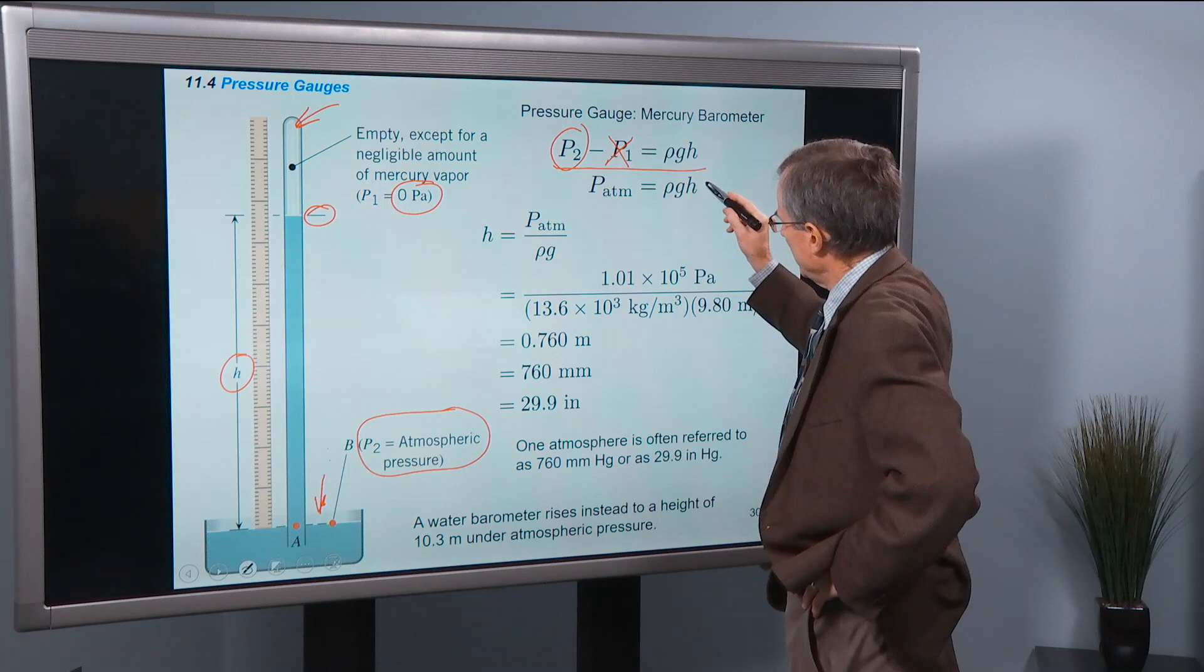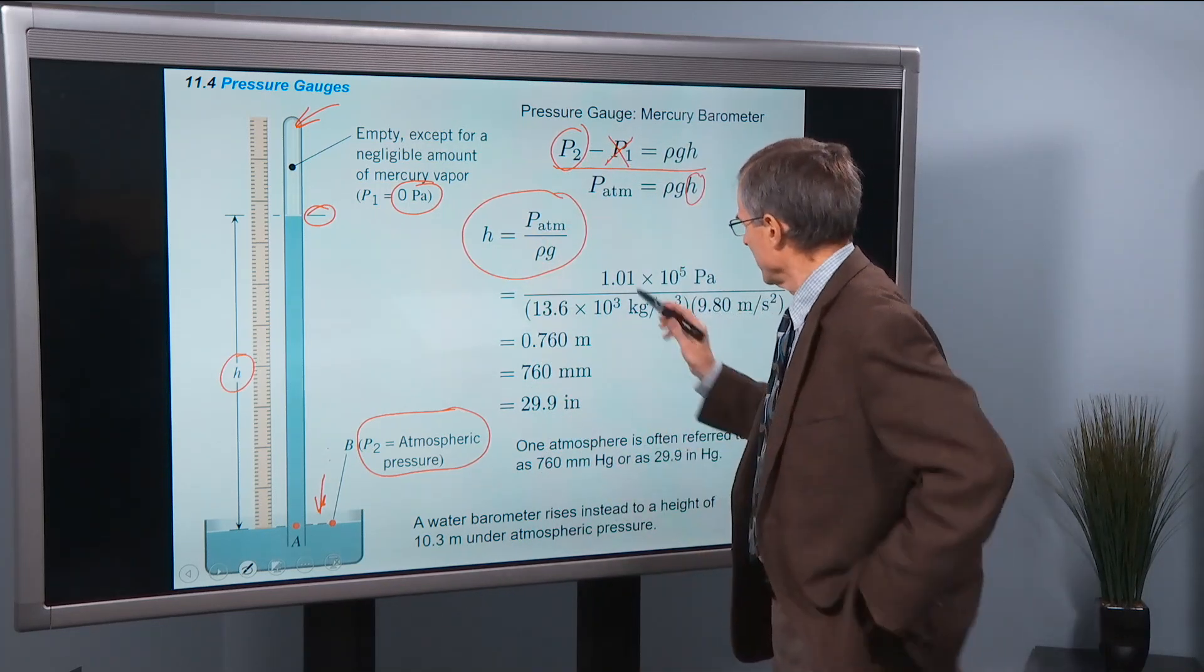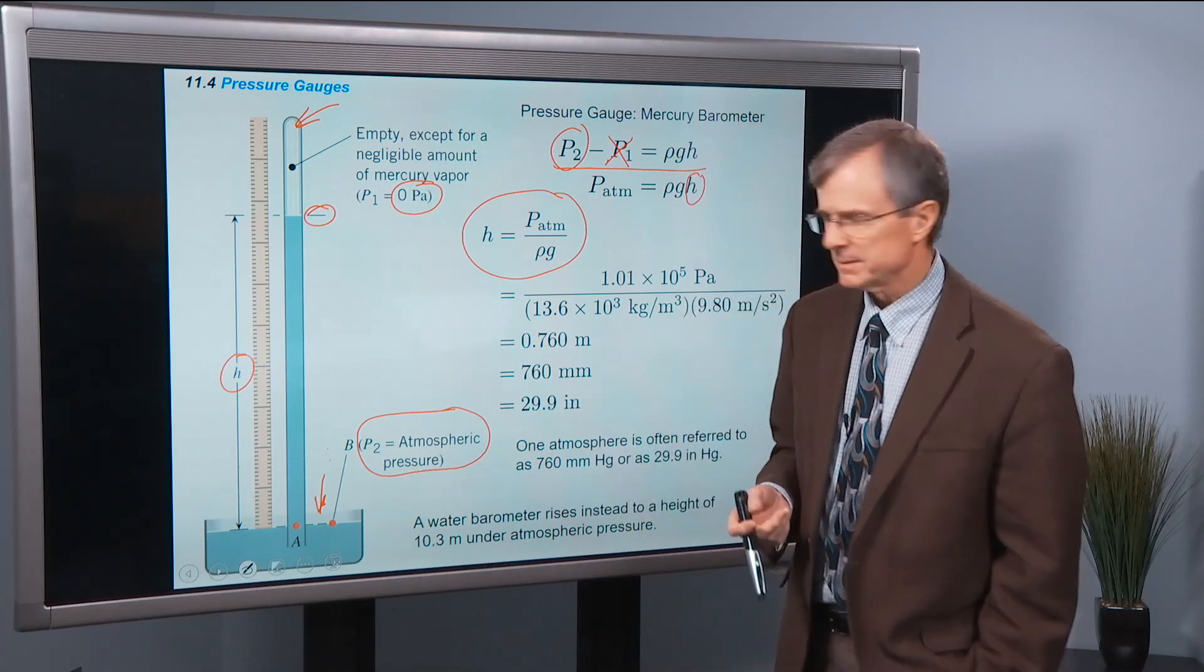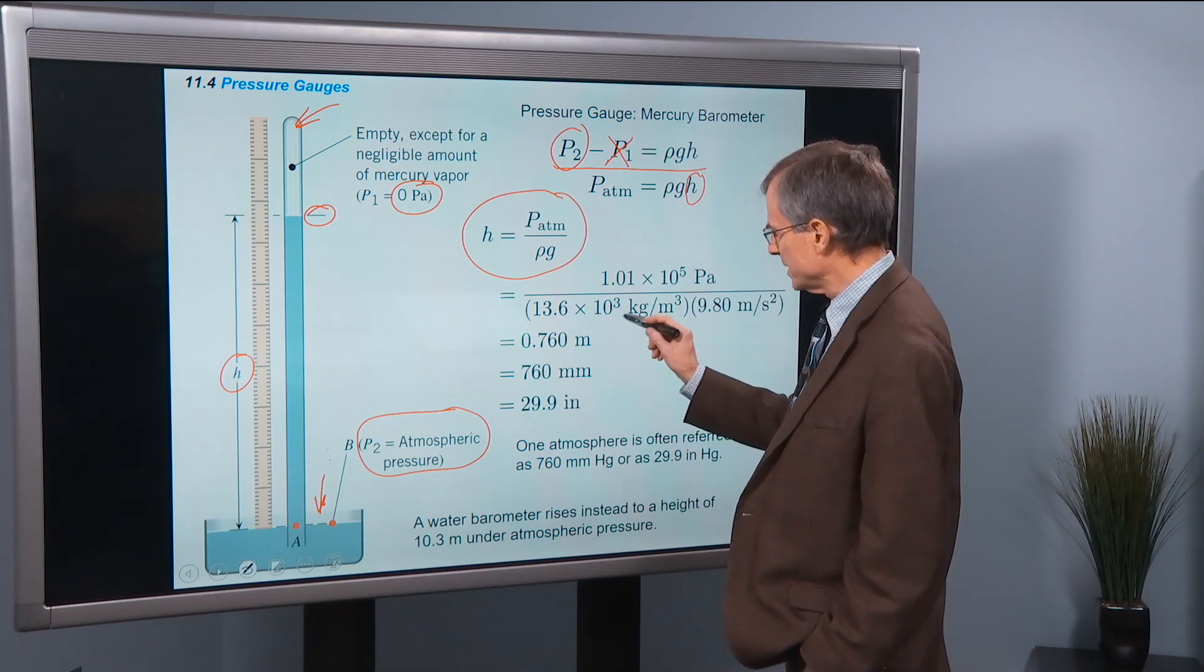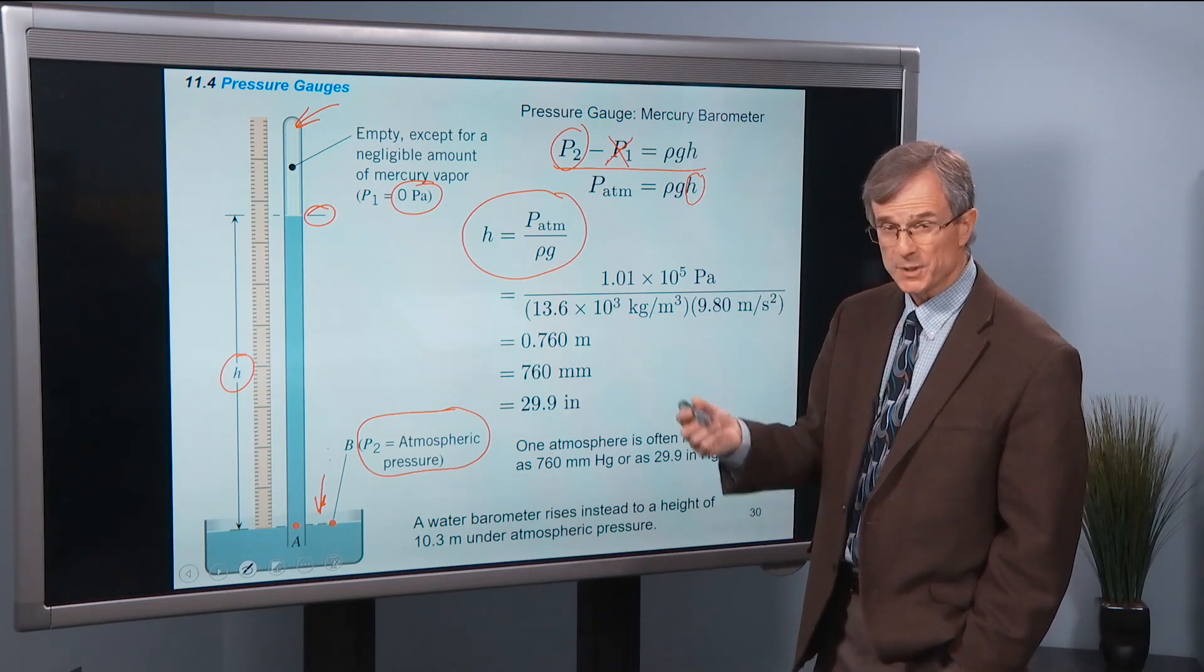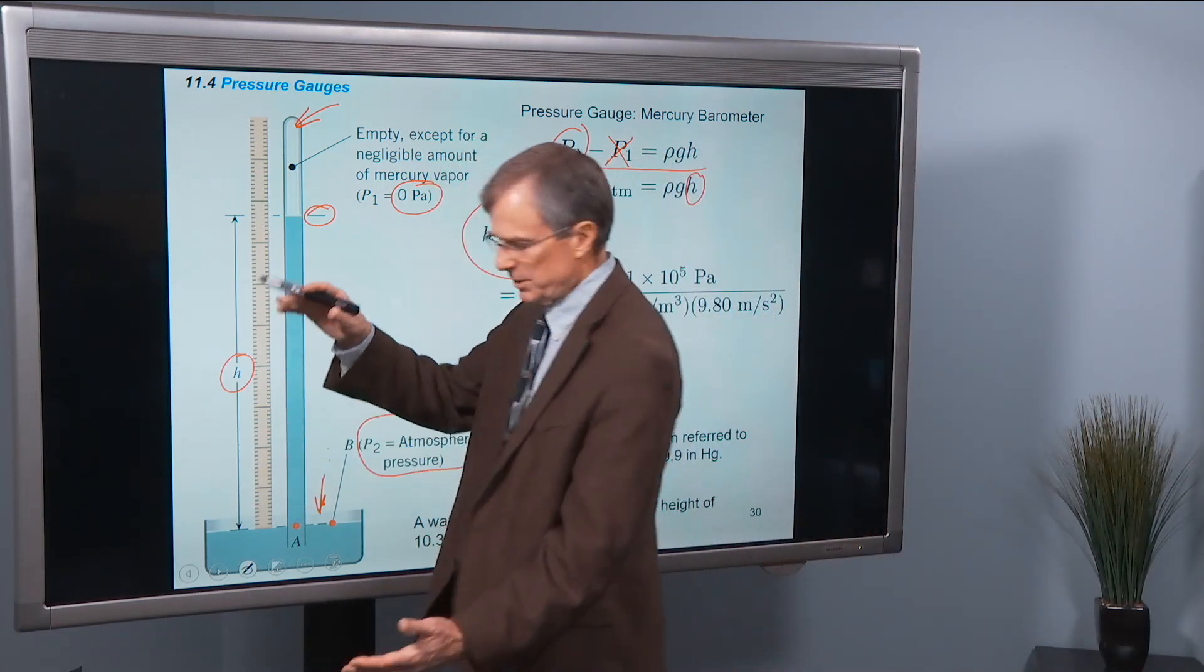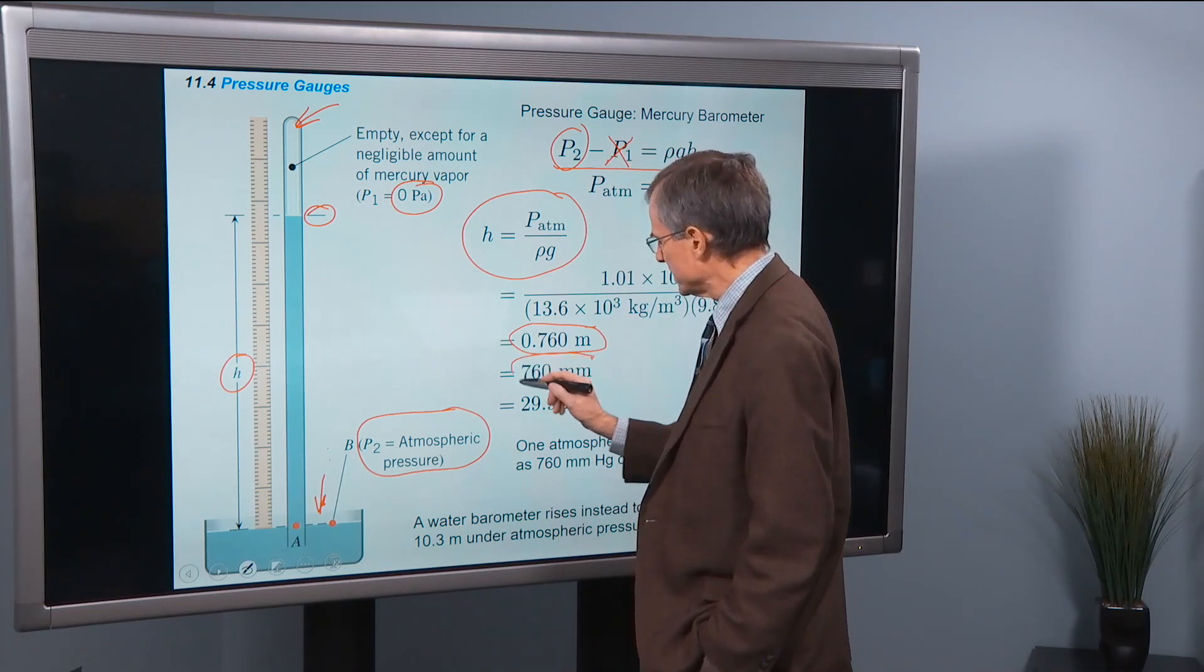And the height, therefore we can solve for by dividing both sides by rho G. So the height of that column, for one atmosphere of pressure, we put 1.01 times 10 to the 5th pascals, the density of mercury. One reason why we use mercury here is because mercury has a higher density than water does. And you don't need as high of a column to get a barometer. So 13.6 times 10 to the 3 kg per cubic meter. Water is 1 times 10 to the 3 kg per cubic meter. So mercury is 13, 14 times more dense than water. Divided by 9.8 is 0.760 meters. That's the height of this column.